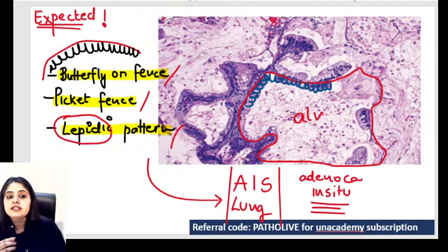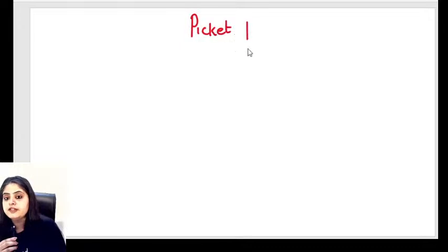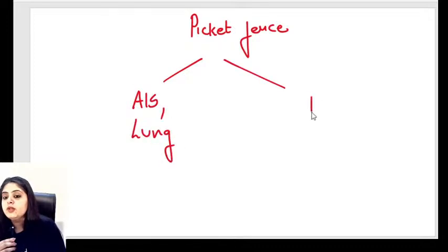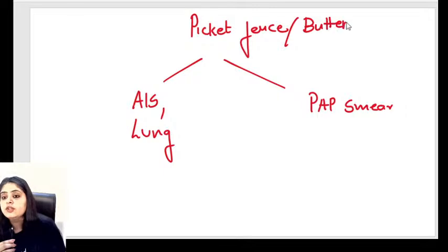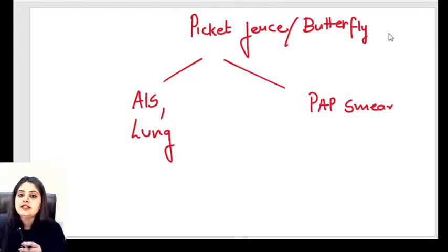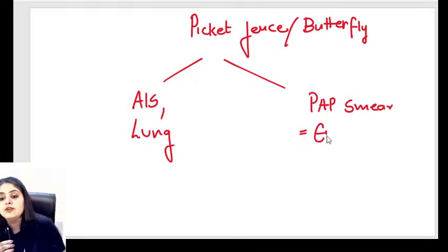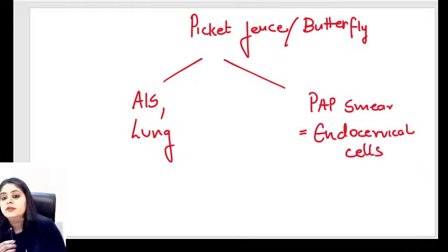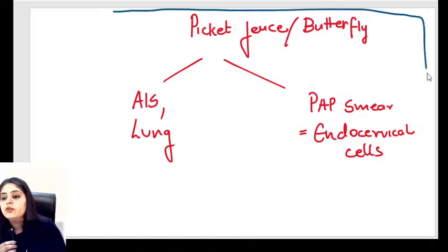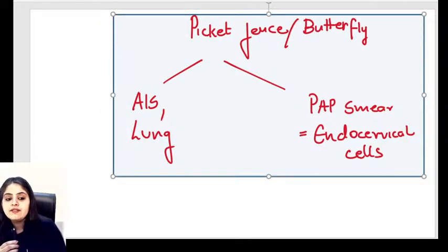There is one more picket fence in pathology — on a Pap smear. Endocervical cells can also show us a picket fence appearance. So in the exam, if asked which of the following show picket fence appearance, remember both adenocarcinoma in situ of the lung and endocervical cells on a Pap smear.